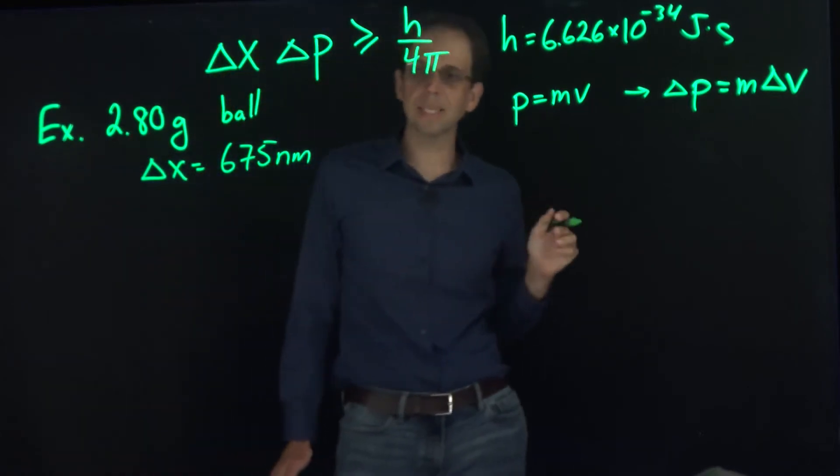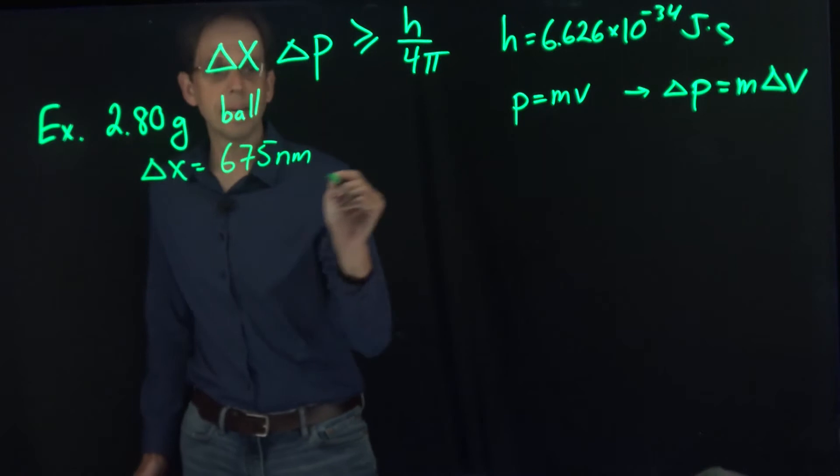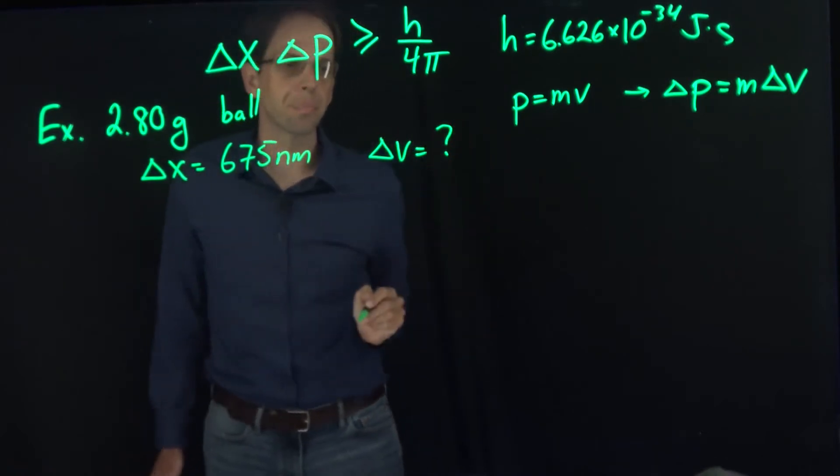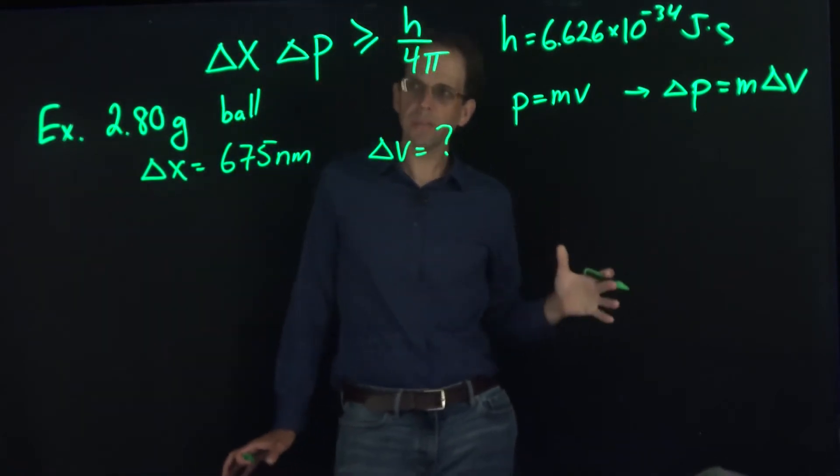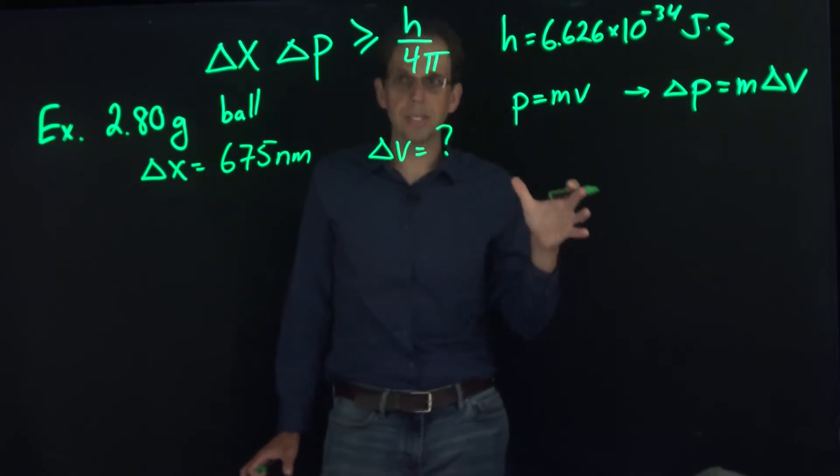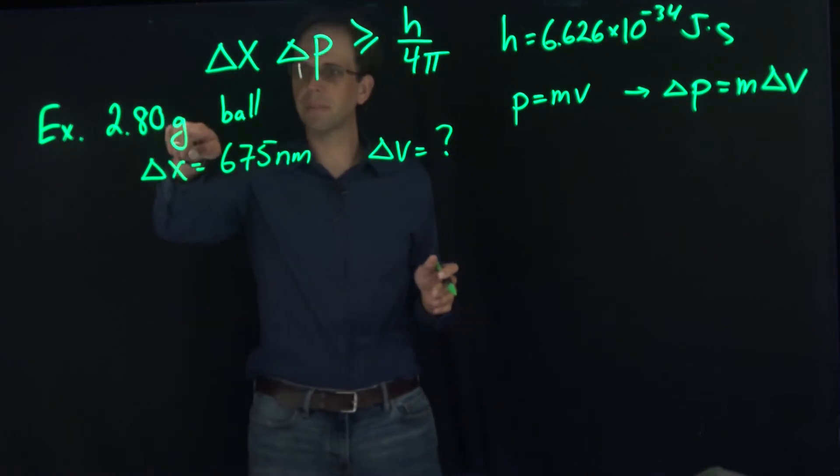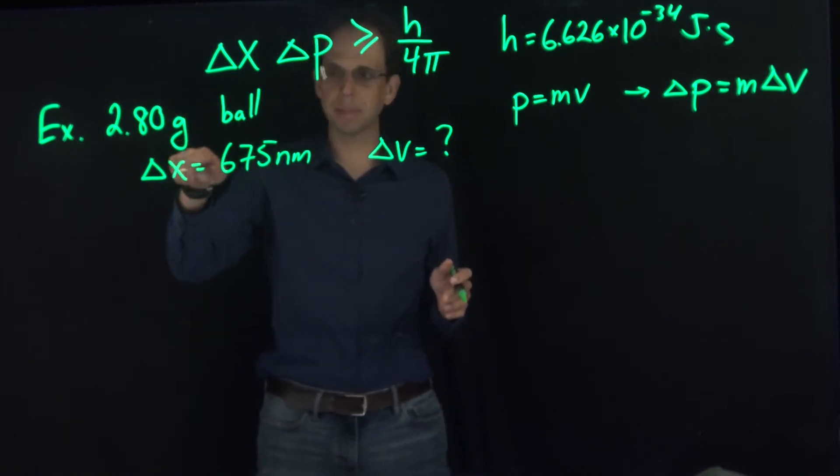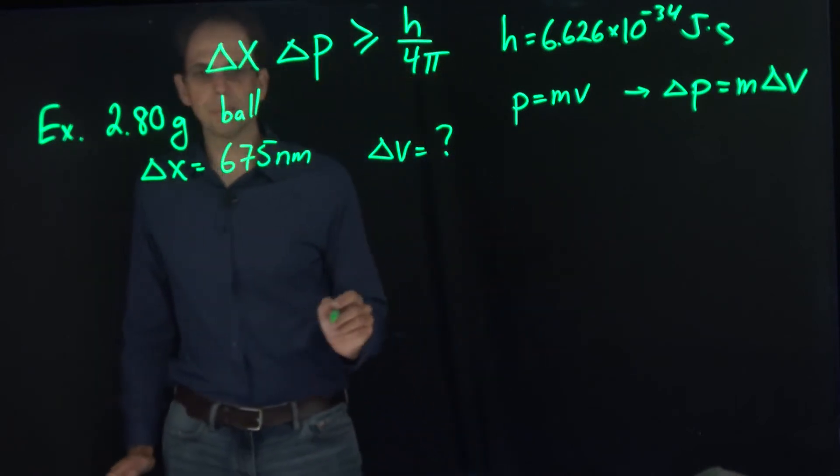We could then ask, what is the uncertainty in the speed? To solve this problem, it's going to be easiest if we first convert everything to SI units. So I'm going to convert my mass from grams to kilograms, and I'm going to convert my nanometers to meters.